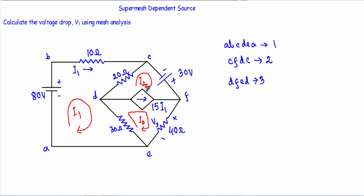After indicating the mesh currents, I will mark the polarity of the resistors. In case of this 10 ohm, I1 will be entering from this direction, therefore this terminal should be positive and this terminal should be negative. In case of this 20 ohm resistor, I1 will be flowing from this direction, therefore this terminal should be positive and this terminal should be negative. Inside mesh 2, I2 will be entering from this direction, therefore this terminal should be positive and this terminal should be negative.